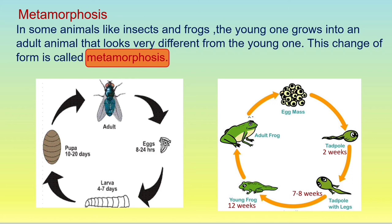Now we see the life cycle of a frog — very interesting. The frog lays an egg mass. In 2 weeks it grows into a tadpole with a long tail, almost looking like a baby fish. After 7 to 8 weeks, the frog starts growing legs — specifically the hind legs or back legs. Soon, in 12 weeks, the frog grows another pair of legs, this time the front legs or forelegs. At this stage the frog still has its tail and is called a froglet. Soon the tail disappears and it becomes an adult frog.